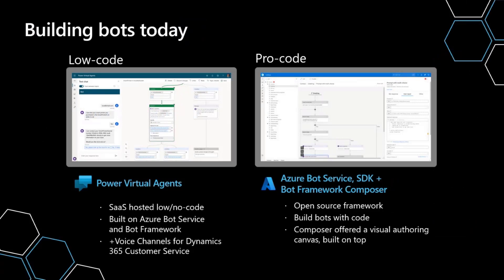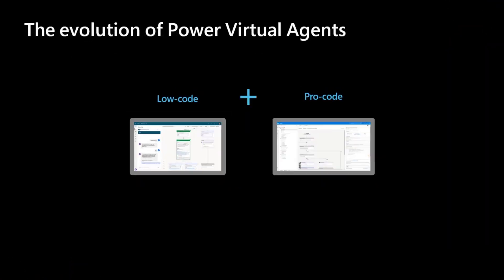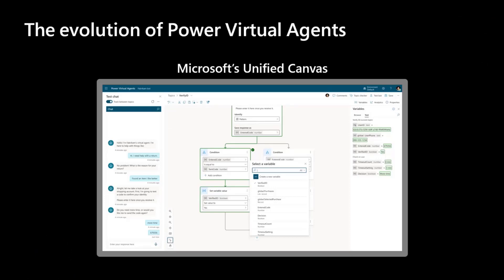Just to get you started, if you're not aware, we have a public preview currently out where, in Power Virtual Agents, you have two different authoring canvas environments. You have a low-code authoring environment that comes out of the box with PVA, and you can also download the Bot Framework Composer, which is a pro-code authoring experience. You can use either of these to build different topics within your conversation. The beauty of the new public preview is that we decided to bring these two canvases together into a new unified authoring canvas.